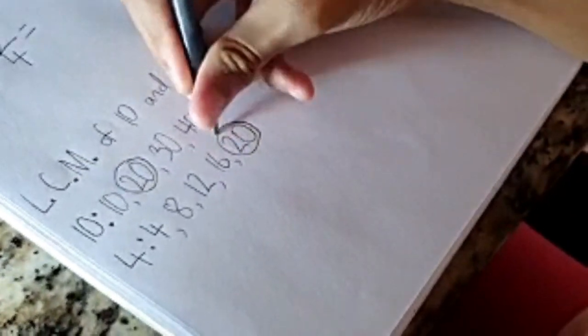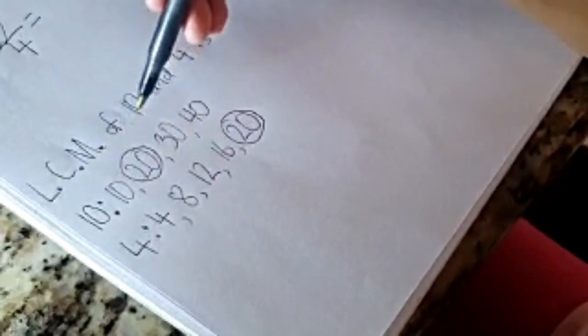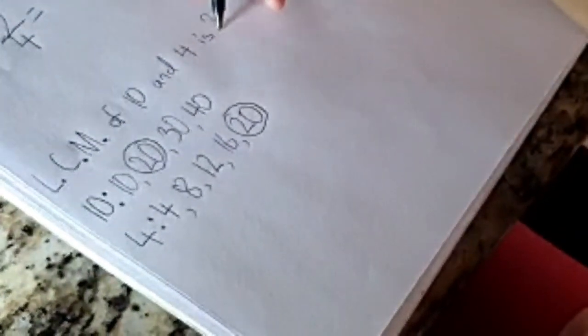So, we are going to circle the 20. The LCN of 10 and 4 is 20.